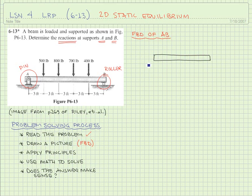Let's label these points A and B. That's the beam. In order to have a complete free body diagram we need to include all external forces. So we have a 500 pound force,